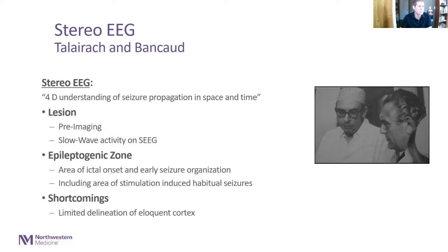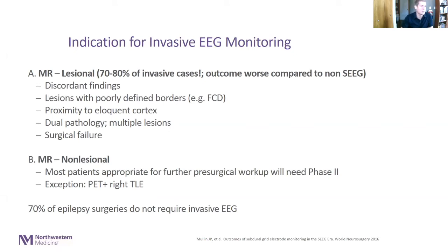Up to today, the technology has shortcomings in terms of functional mapping and delineation of eloquent cortex. Not everybody needs invasive monitoring, and even in invasive monitoring series, the majority of patients is lesional — about 70 to 80 percent actually have a lesion — but the findings may be discordant, or the lesion may have poorly defined borders, or be so close to eloquent cortex that further refinement is necessary, or patients may have several lesions or an unsuccessful prior surgery. There are also an increasing number of patients with non-lesional epilepsy, the majority of whom really need an invasive evaluation, with the possible exception of patients who have non-dominant temporal epilepsy and PET findings or other findings which clearly support the epileptogenic area.